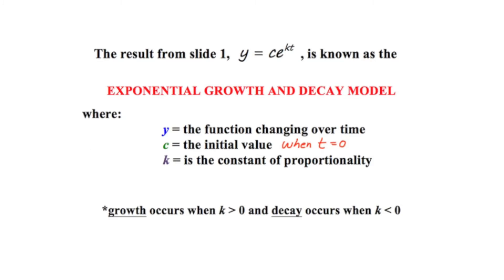k is the constant of proportionality and it's never going to be given to you. It's going to be something that you're going to have to solve for. But it's really important to realize that k is a constant. Growth will occur when this value of k ends up being positive or larger than zero. Decay is going to occur when k is less than zero.